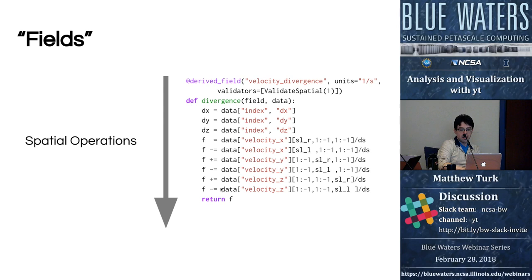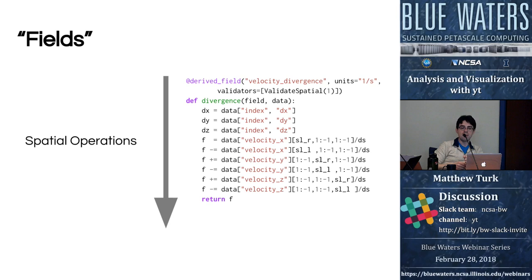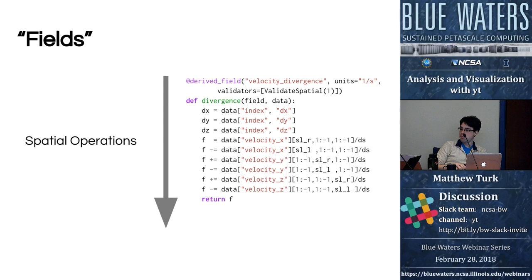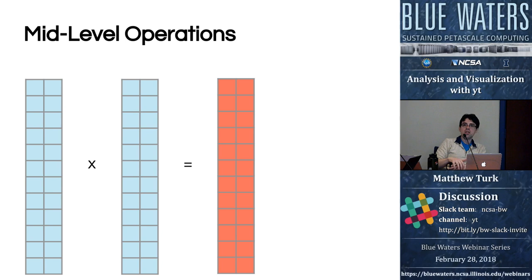Note that our output field will be one less in each dimension than our input data because we're using a stencil that is one cell bigger. We do this in YT by doing cascading interpolation to generate ghost zones if they are not available on disk — we take our lowest-level grids and do conservative interpolation from each level necessary to generate a grid covering the necessary region. At present, this doesn't work for particle codes; however, there is work being done applying the SPH formalism to generate spatial derivatives of SPH fields.